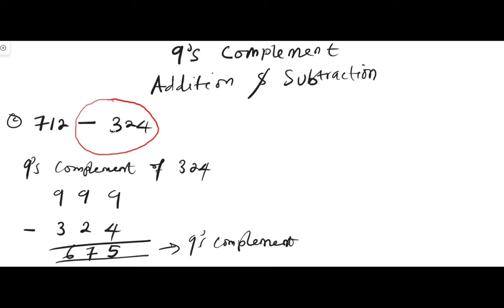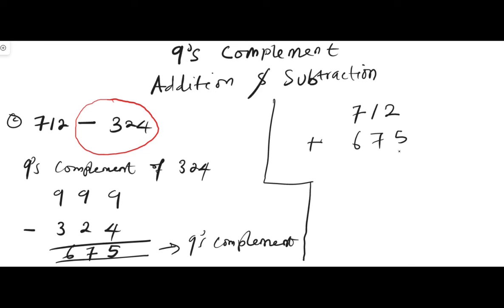This 675 is the nine's complement of 324, which was the negative number. Next, we add this nine's complement to 712: 712 plus 675. We get: two plus five is seven, one plus seven is eight, seven plus six is thirteen.